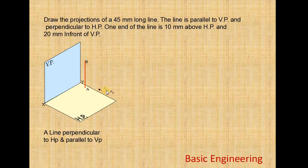Now we draw the projection. Since the line is parallel to VP, we get the true length on the vertical plane, that is the exact length of 45mm. From the front view direction, we get the line like this. The length of this line is the true length — that is why we get the true length, because the line is parallel to the vertical plane.